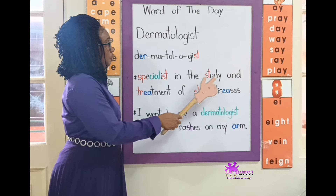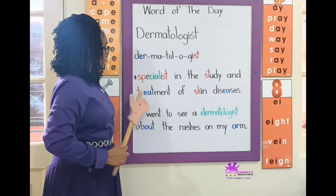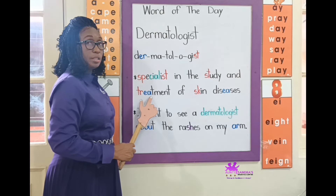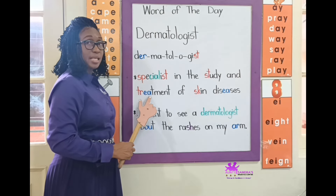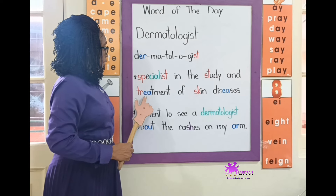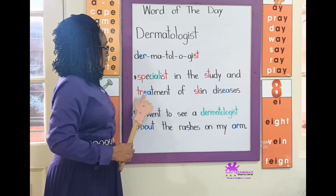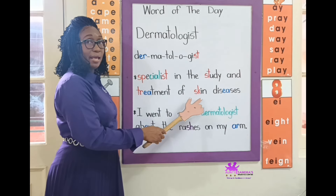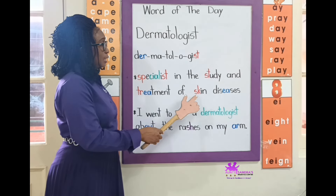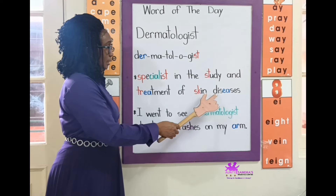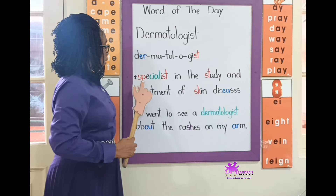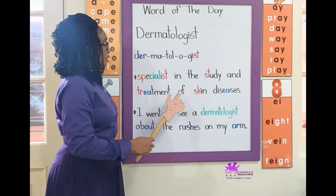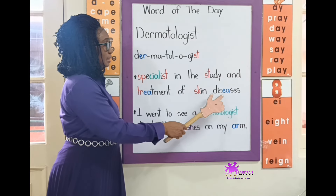In the study and treatment — T-R, consonant blend TR. E-A working together, this EA is going to say E. Treatment of skin diseases. Specialist in the study and treatment of skin diseases.